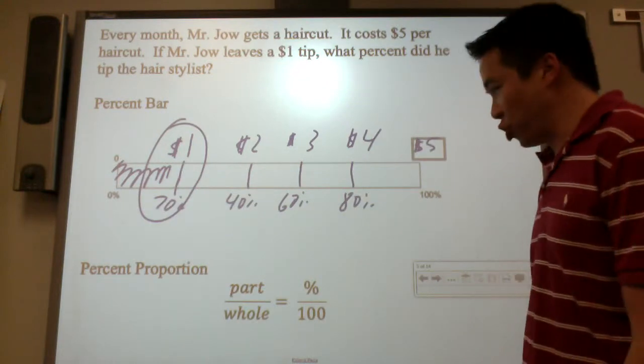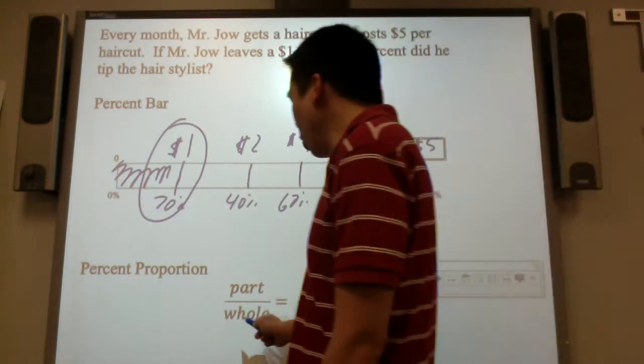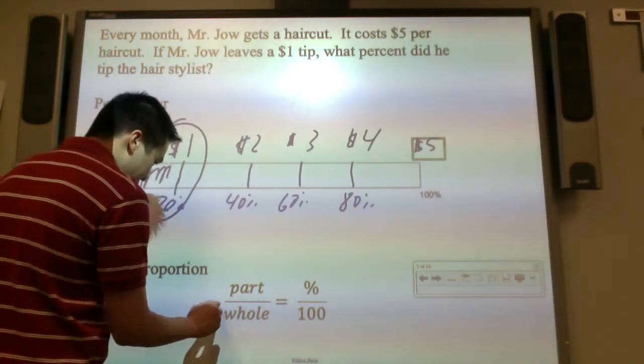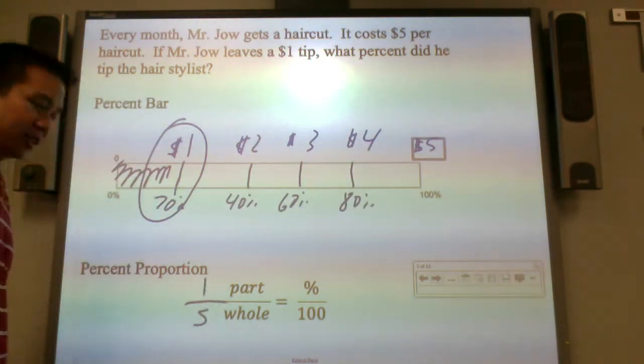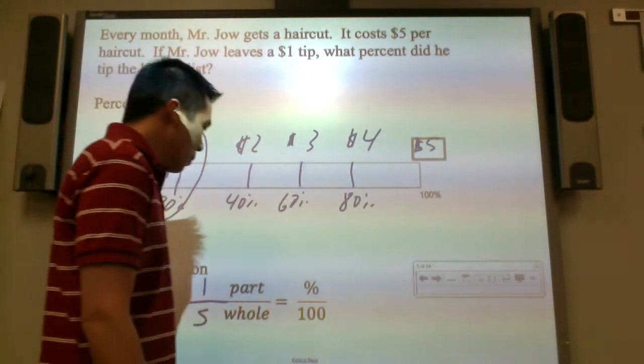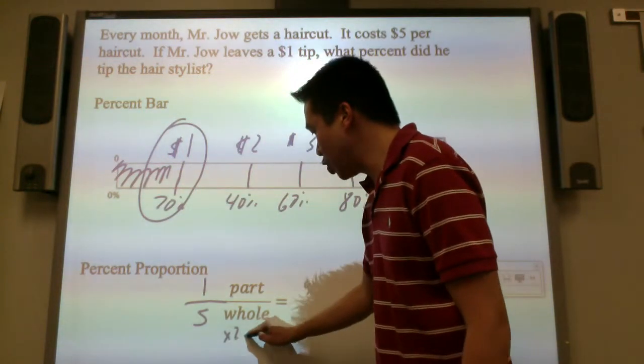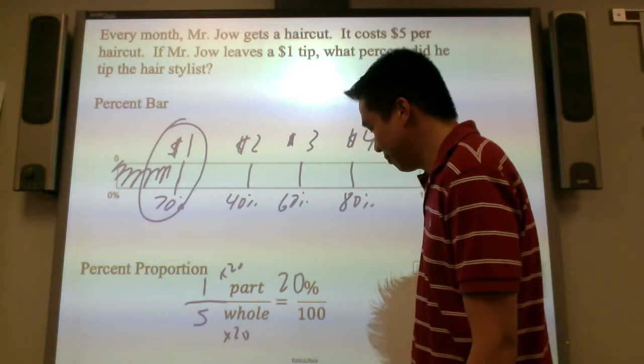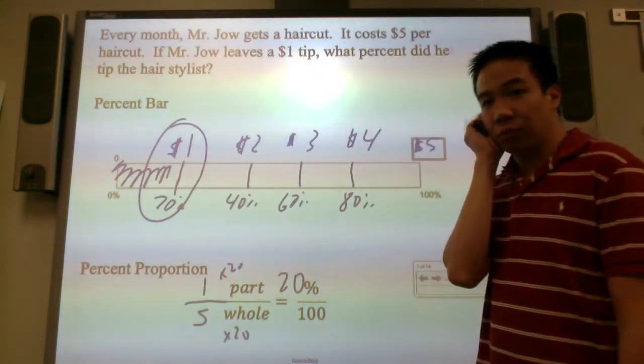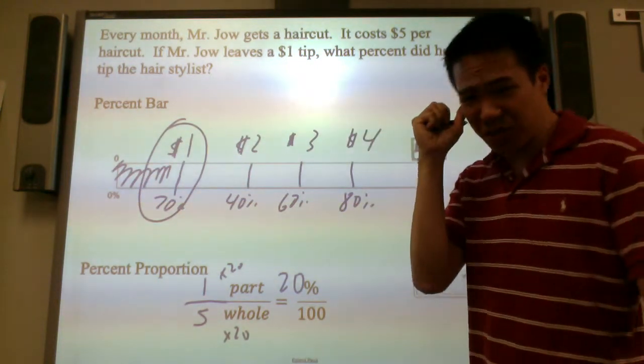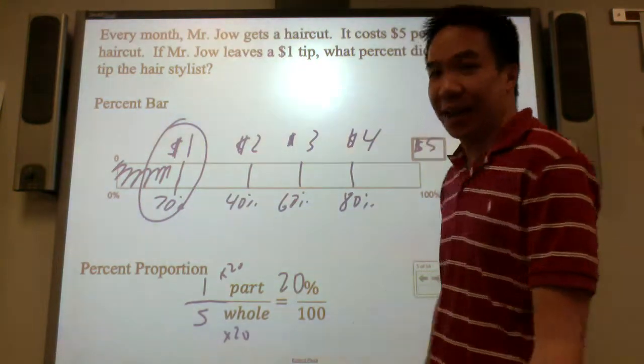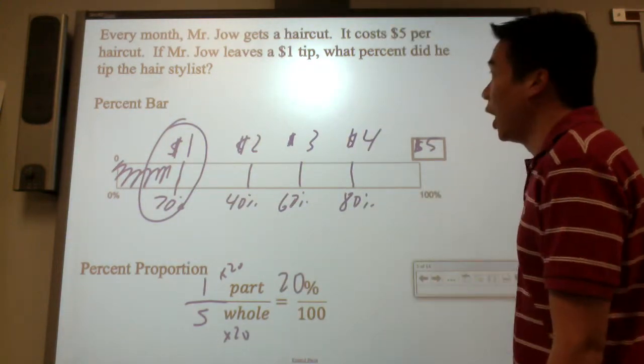Let's use a percent proportion. The whole haircut costs $5. I left a $1 tip. What percent? Can you build this up? You build it up by 20, that's why you get 20%. The percent proportion is so much faster, so much efficient. I like the percent proportion.